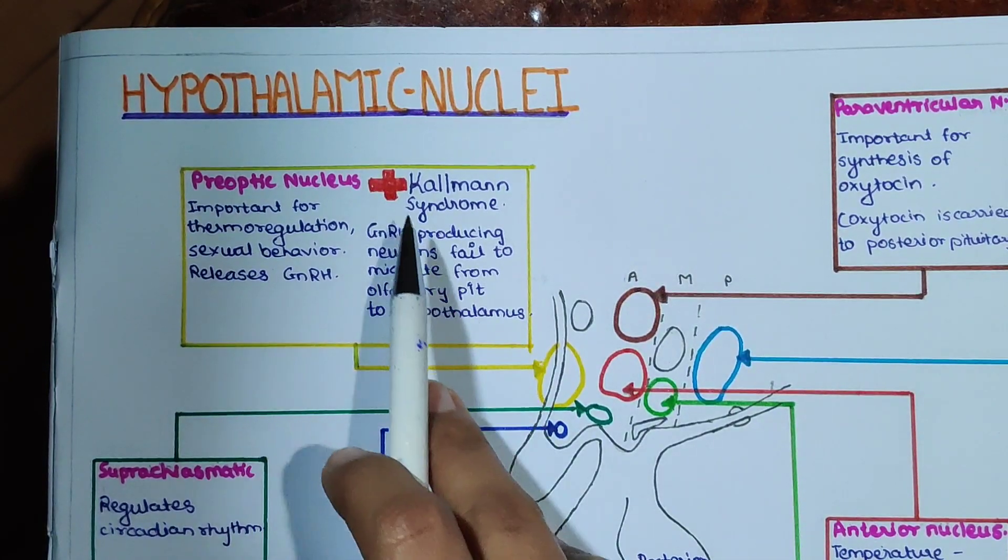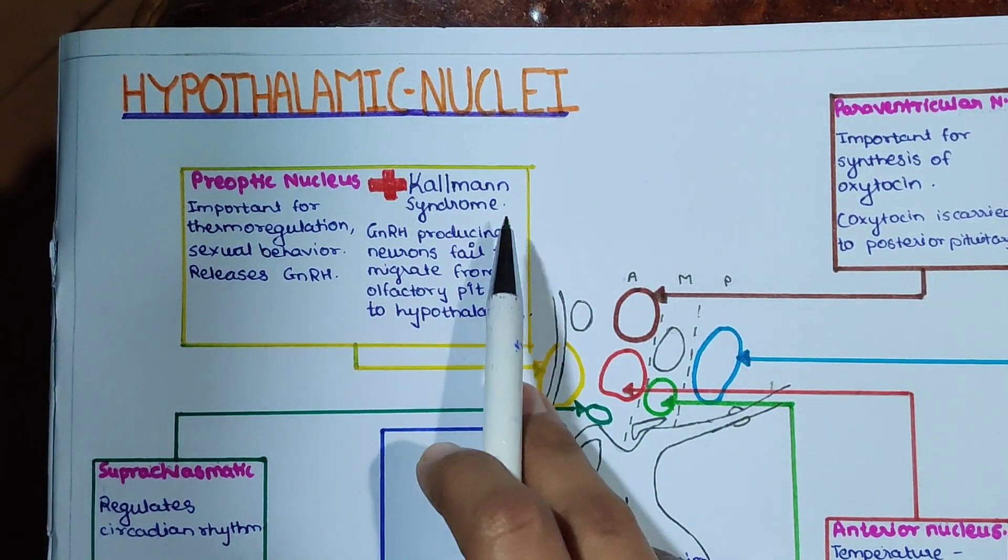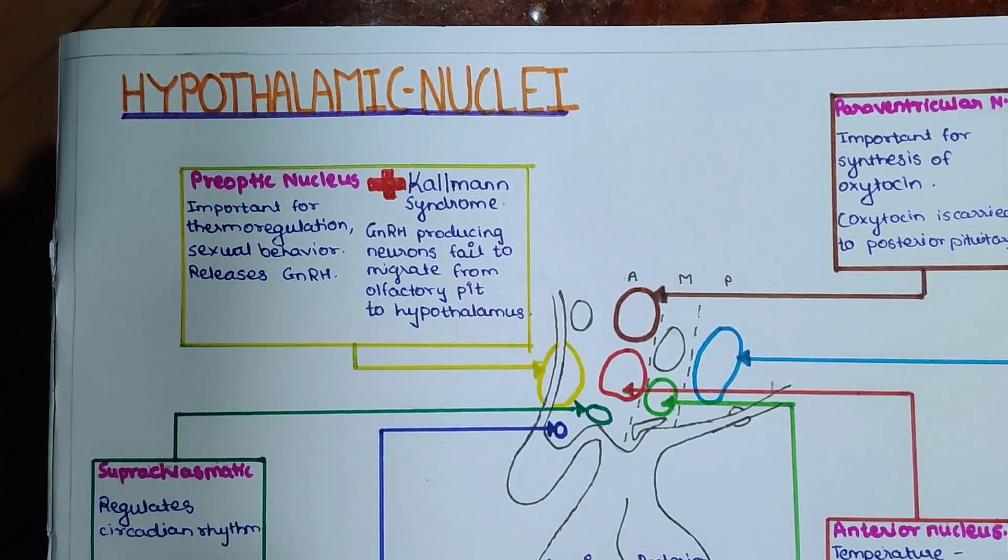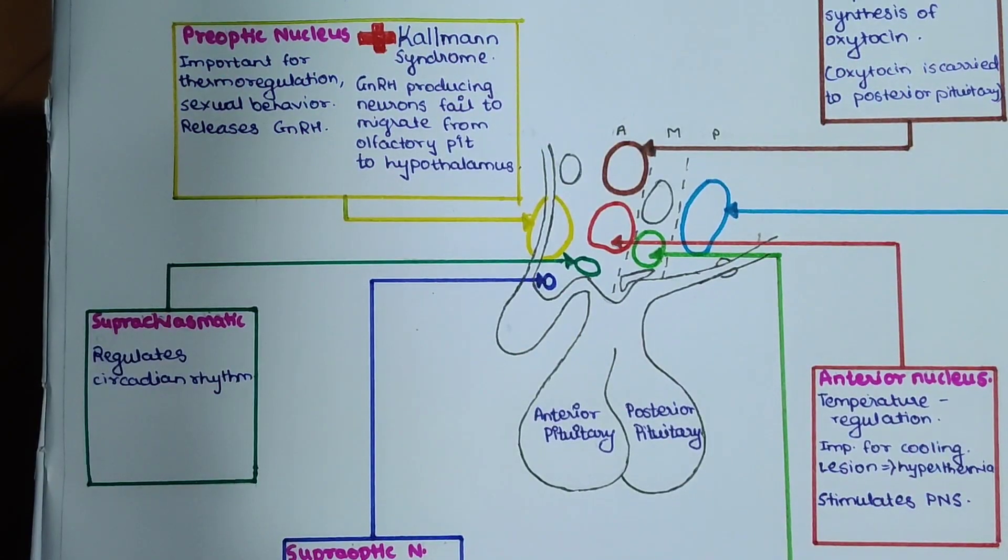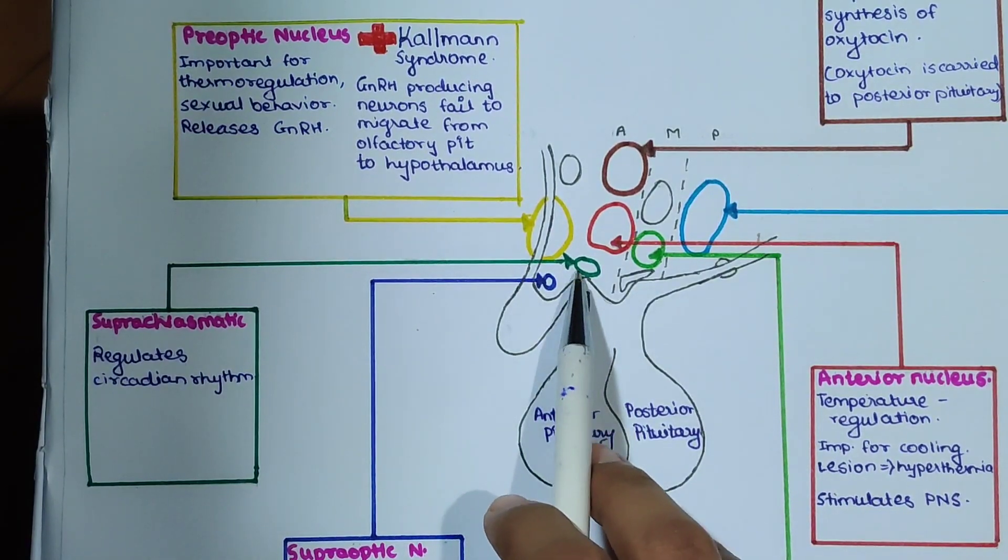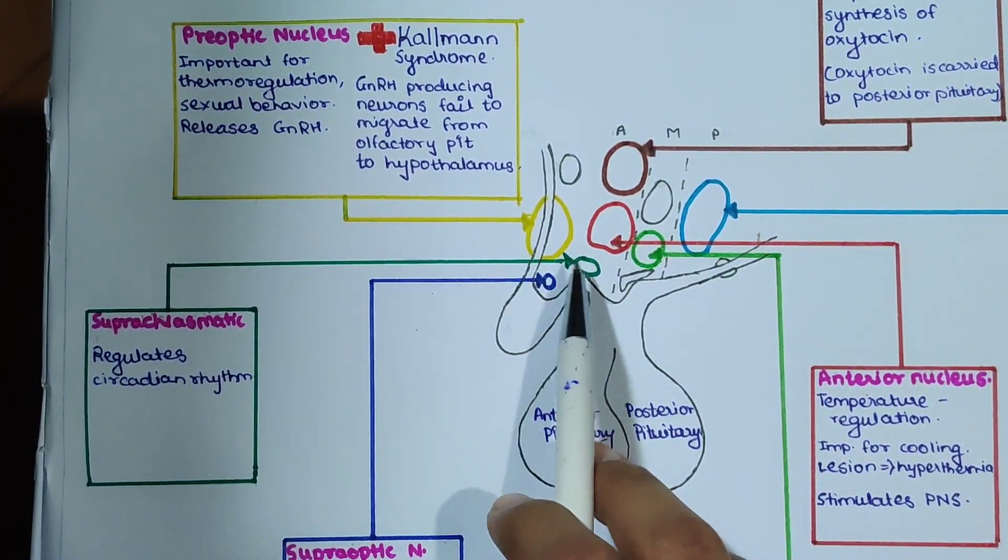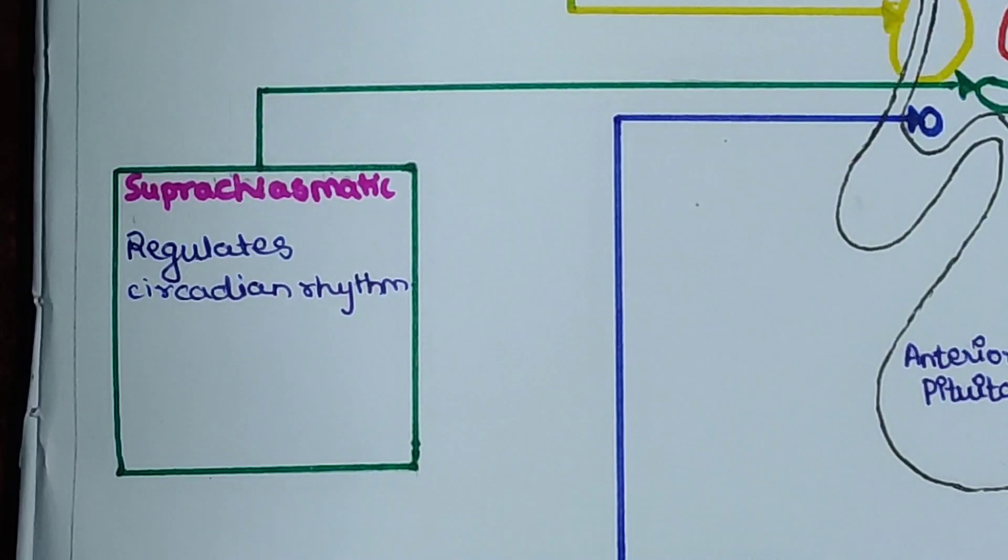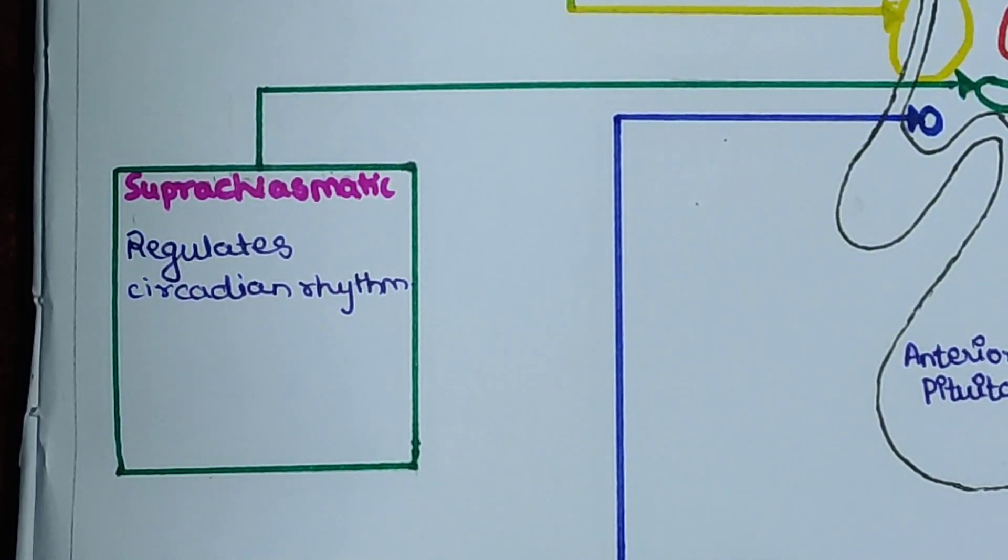Next, we are going to talk about suprachiasmatic nucleus, which is highlighted in green. Suprachiasmatic nucleus controls circadian rhythm. This rhythm controls nocturnal release of ACTH, release of prolactin and melatonin, and is also important for regulating our sleep-wake cycle.